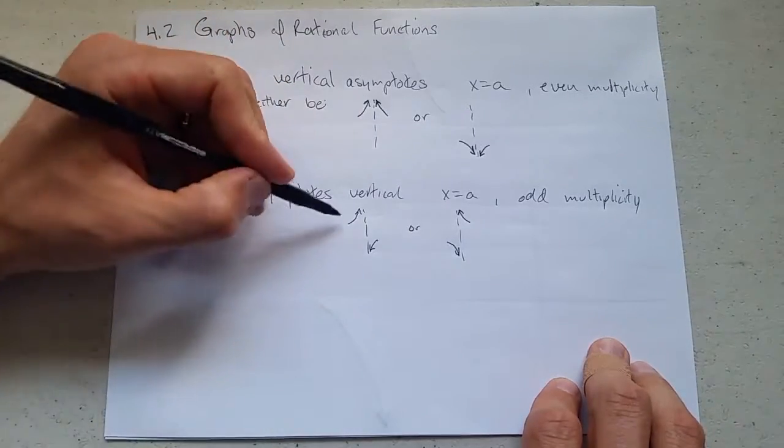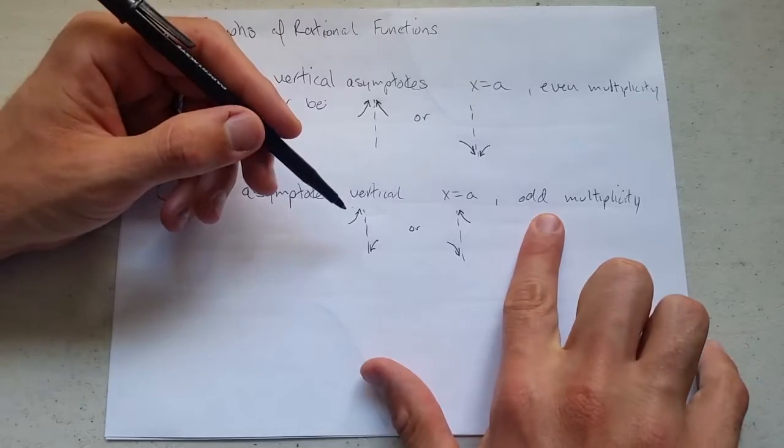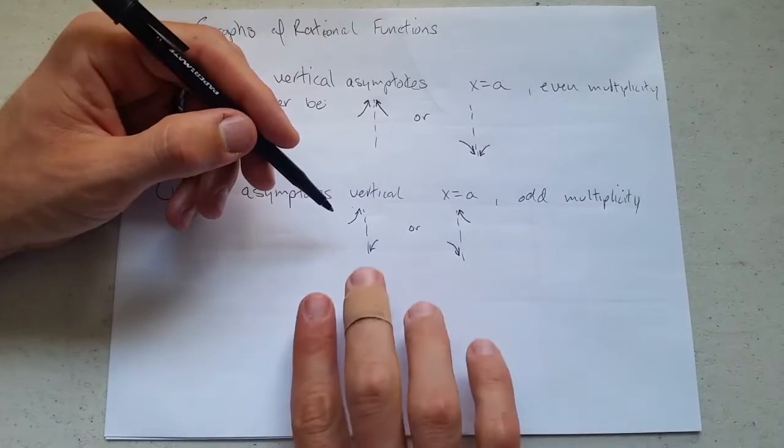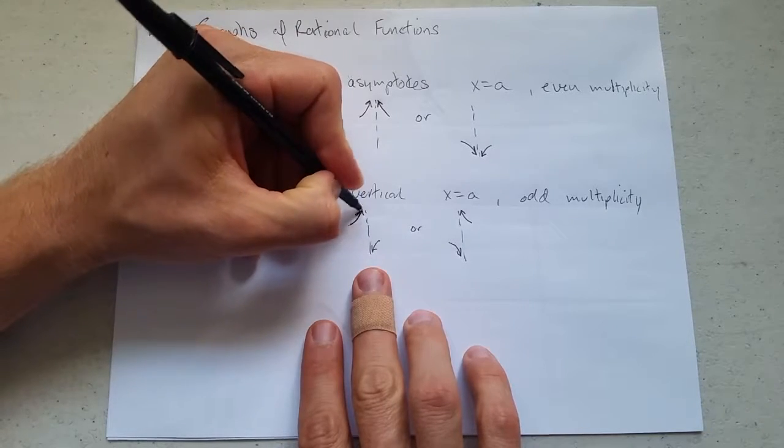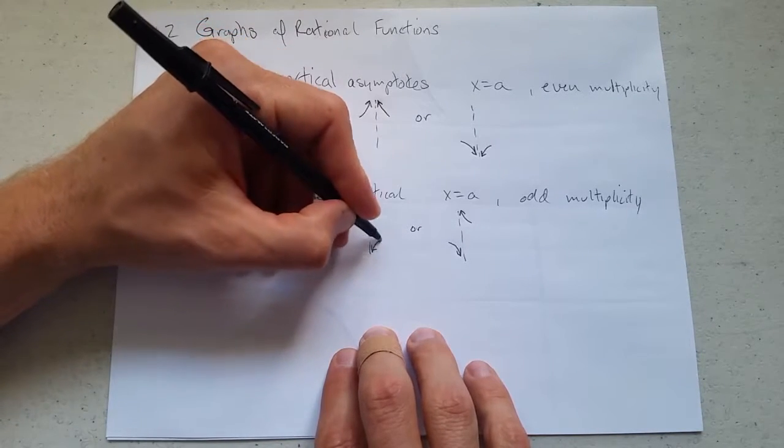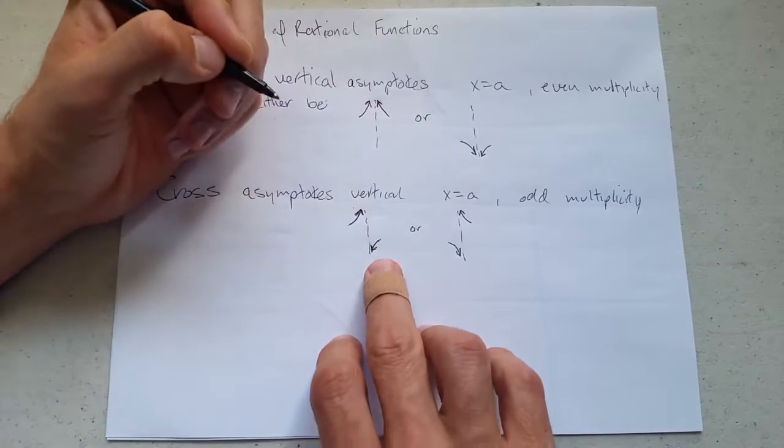Cross asymptotes happen when you have odd multiplicity. Cross asymptote, or crossing, refers to if you approach on the top on one side, you'll approach on the bottom on the other.